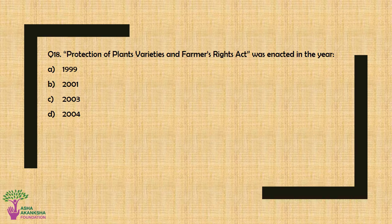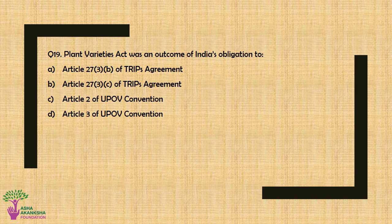Question No. 18: Protection of Plant Varieties and Farmers' Rights Act was enacted in the year — Option A: 1999, Option B: 2001, Option C: 2003, or Option D: 2004. The correct answer is Option B — 2001.